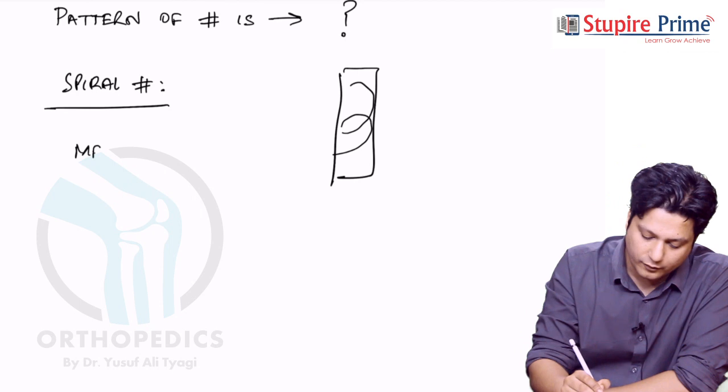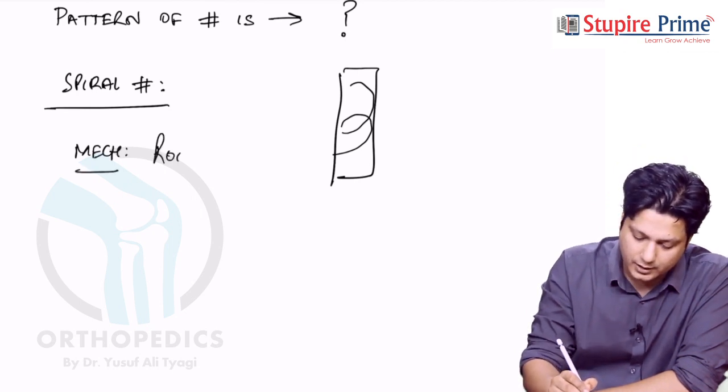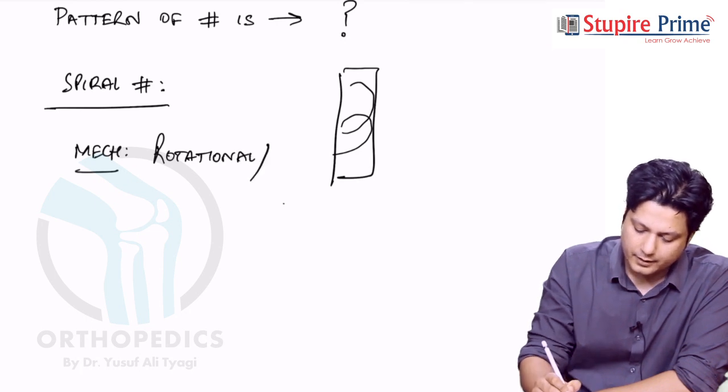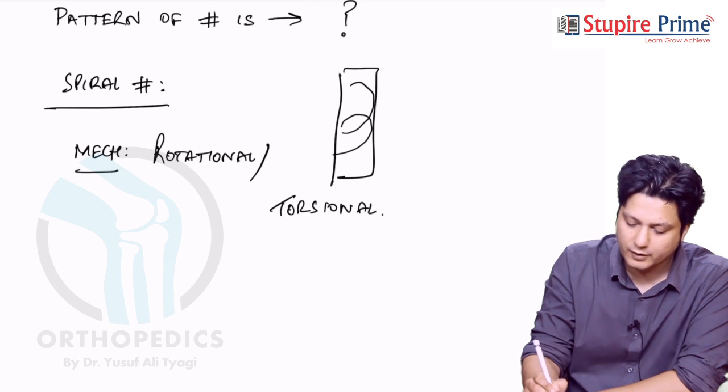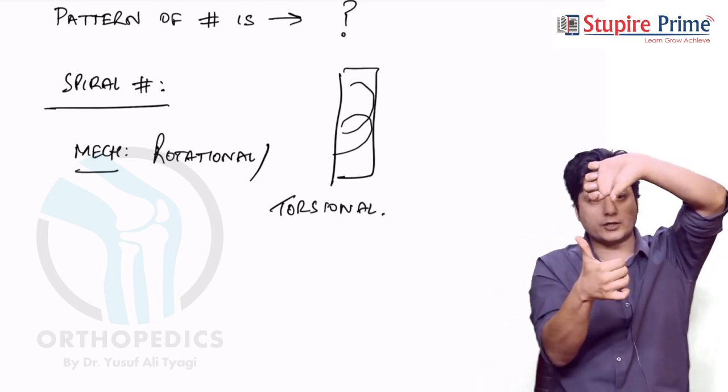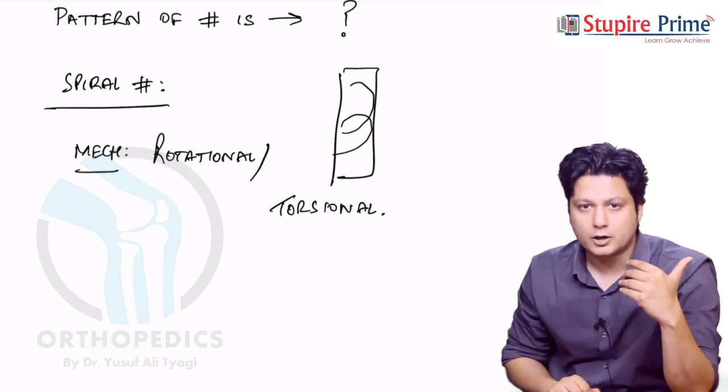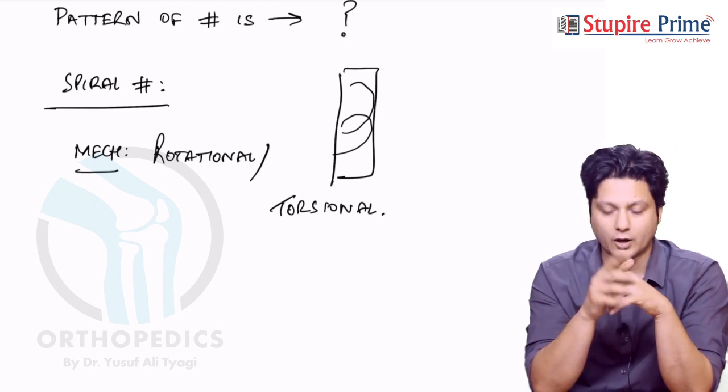The mechanism of injury for causing these spiral fractures is a rotational or torsional injuries. It is not very difficult to understand that if a bone is subjected to a twisting force or rotational force or torsional force, then it will result in the spiral kind of breakdown.